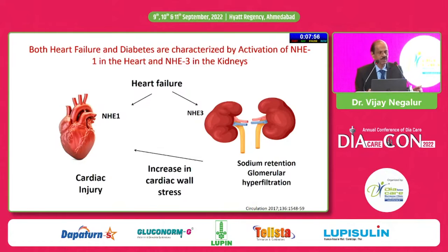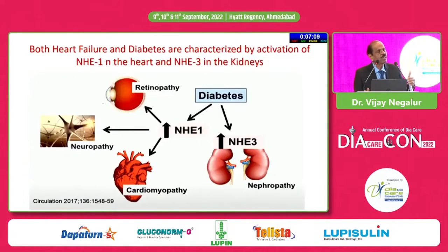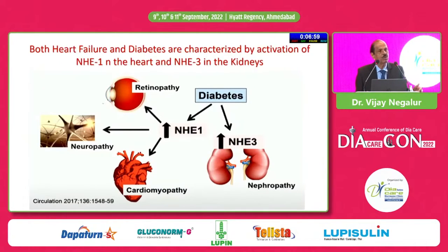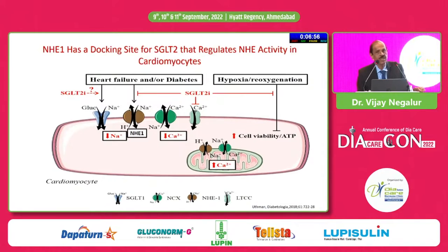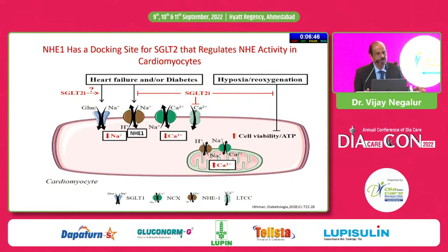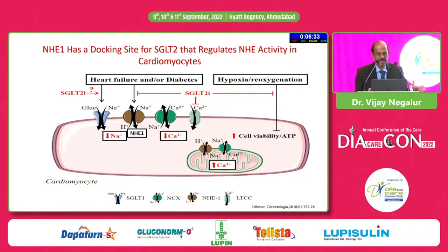The heart has a transporter — the sodium-hydrogen exchanger (NHE1) — and stimulation of this exchanger is responsible for microvascular complications rather than hyperglycemia as taught in medical school. Importantly, cardiomyocytes do not have SGLT2 receptors, yet SGLT2 inhibitors have beneficial effects on cardiac failure. The mechanism is that there is a docking site for SGLT2 on NHE1, allowing SGLT2 inhibitors to act on the myocardium through this particular transporter.